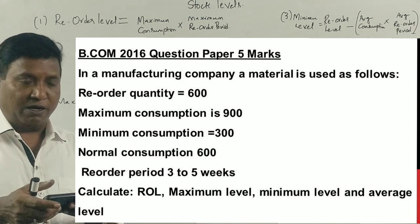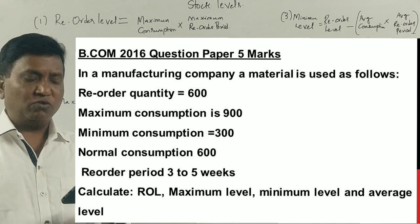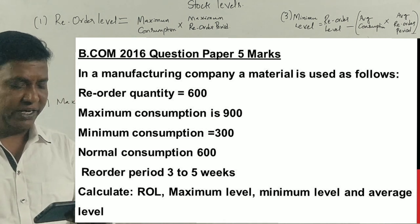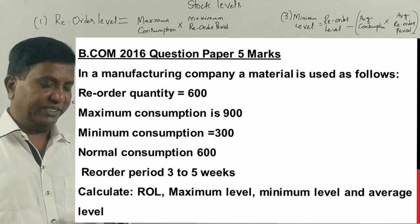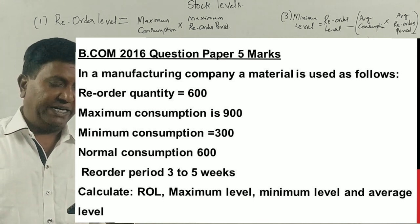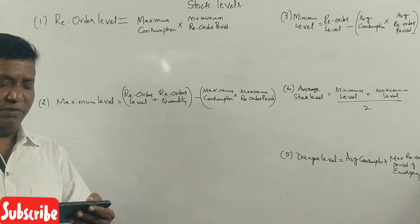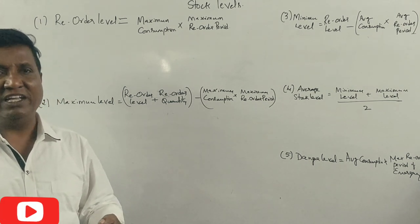In a manufacturing company, a material is used as follows. Reorder quantity 3600, maximum consumption 900, minimum consumption 300, normal consumption 600, reorder period is 3 to 5 weeks. Calculate reorder level, minimum level, maximum level, and average stock level.